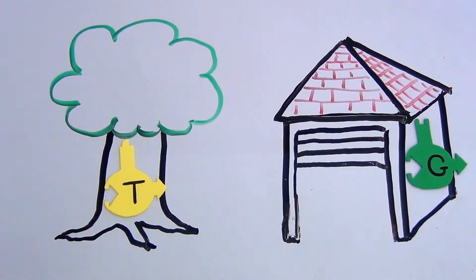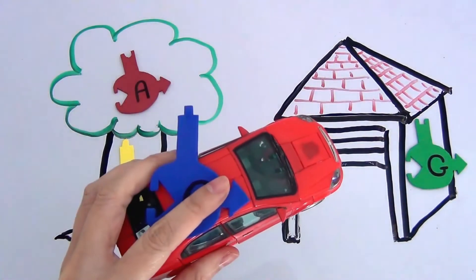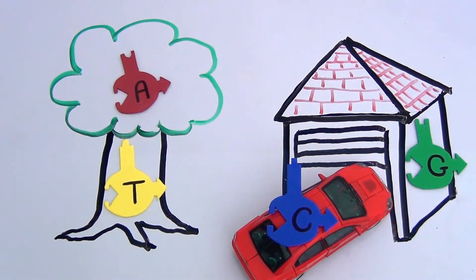I like to remember it as apple in the tree, car in the garage. The order of these bases are the instructions for creating everything in living things.